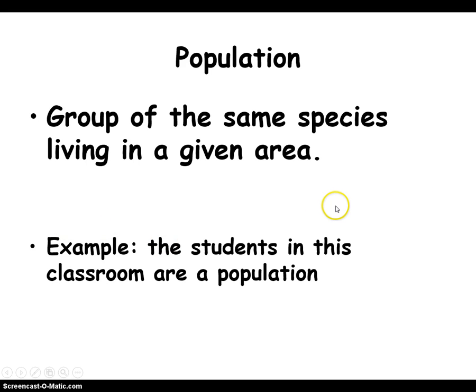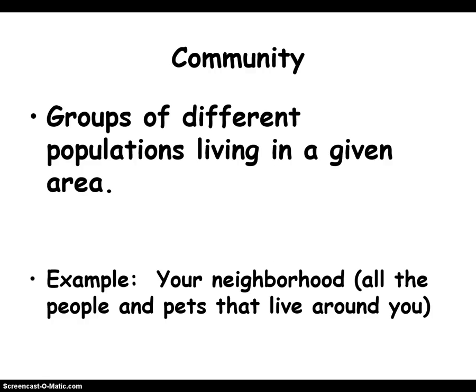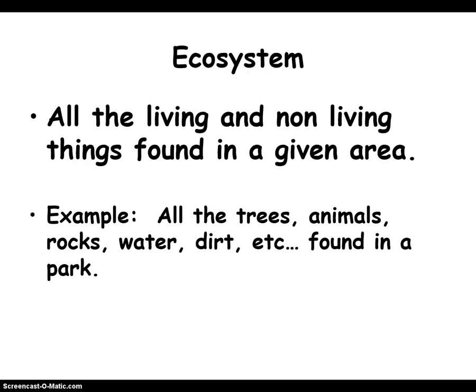If we go a little bit farther, a group of the same organisms living together is called a population. If we take different populations, we create a community — so you, me, your pets, all living in the same area, that's a community. And finally, an ecosystem is where it gets a little different because now we're adding non-living stuff, like rocks, water, and sunlight along with the living animals and plants. That's an ecosystem.